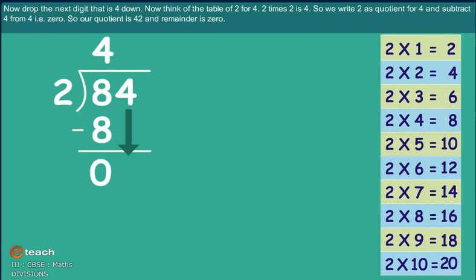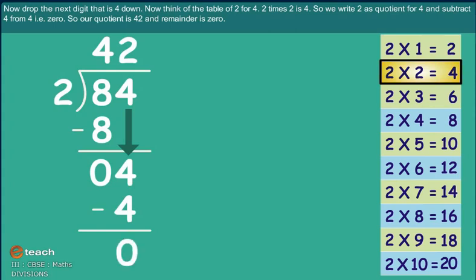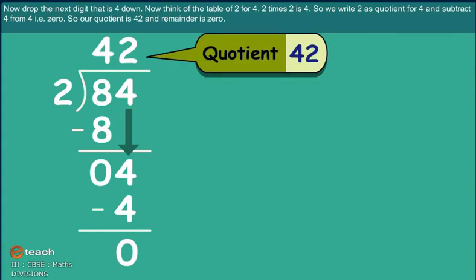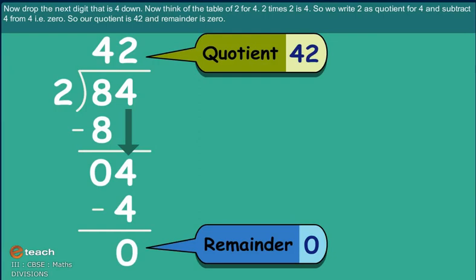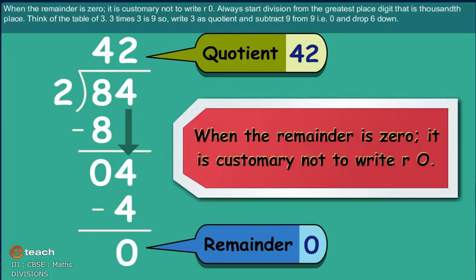Now, drop the next digit, that is 4, down. Now, think the table of 2 for 4. 2 times 2 is 4. So we write 2 as quotient for 4 and subtract 4 from 4 is 0. So our quotient is 42 and remainder is 0. Information box: when the remainder is 0, it is customary not to write R0.